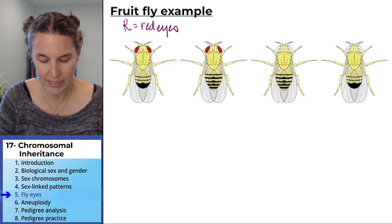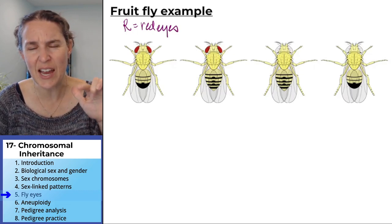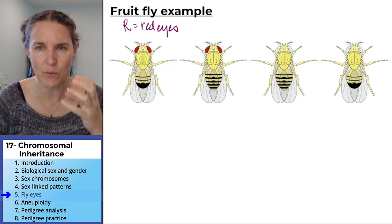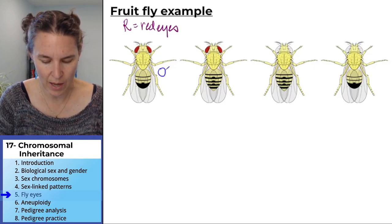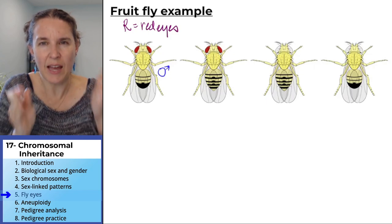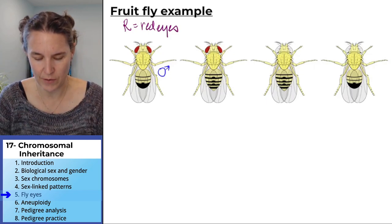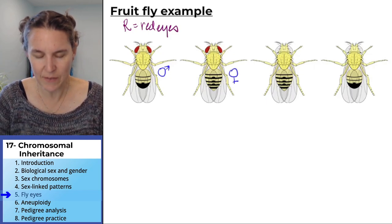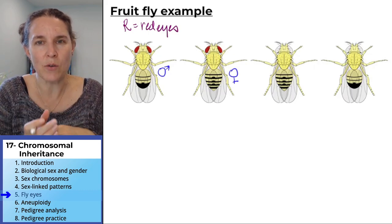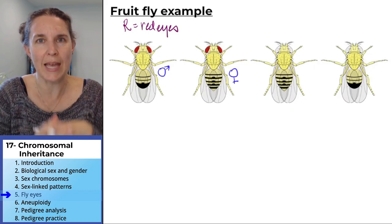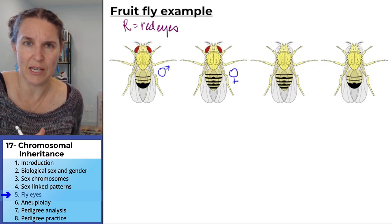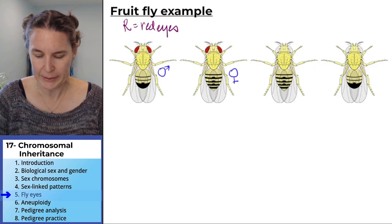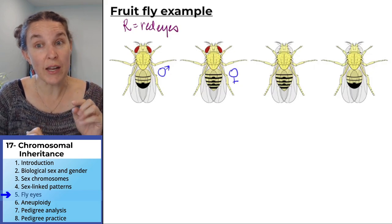In fruit fly land, do you see that curved abdomen, that really round abdomen? This is a male fly, and the pointed abdomen is a female fly. I believe that pointed abdomen is about having an egg depositor, like a tail for digging a hole and depositing an egg.